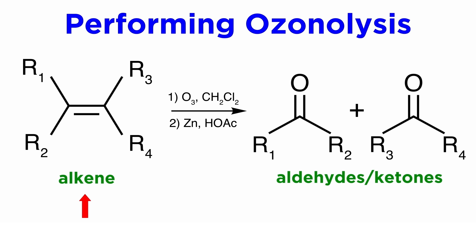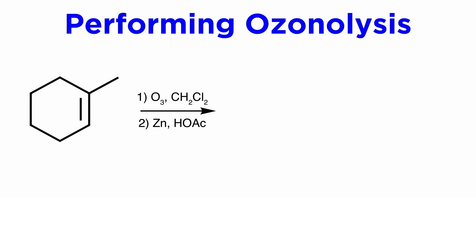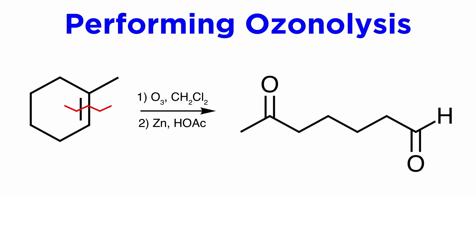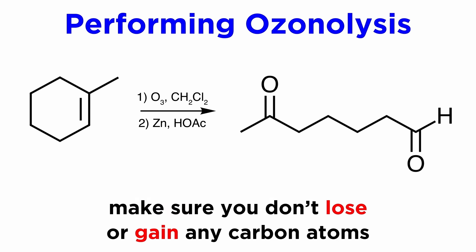Of course this will be the case if the starting material is linear. If the starting material is cyclic, the ring will open up and we will end up with one long linear molecule, with two carbonyls a bit apart. When predicting the products of an ozonolysis reaction, remember that no carbon atoms are lost or gained, so the product or products must have the same number of carbon atoms as the starting material.